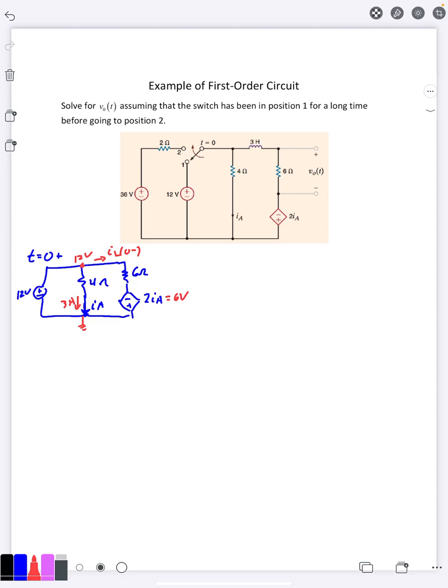So 2 times that would be 6 volts. Now because of the way the dependent source is set up there, that means that if this is ground at the bottom here, there's going to be a 6 volt drop. So we're at negative 6 volts right there, which means then the current going through there, the IL of 0 minus, starts at 12 volts, ends at negative 6 volts, divided by 6 ohms. And we are going to get 3 amps there.